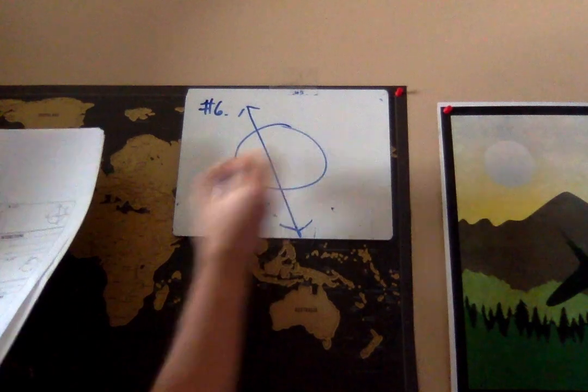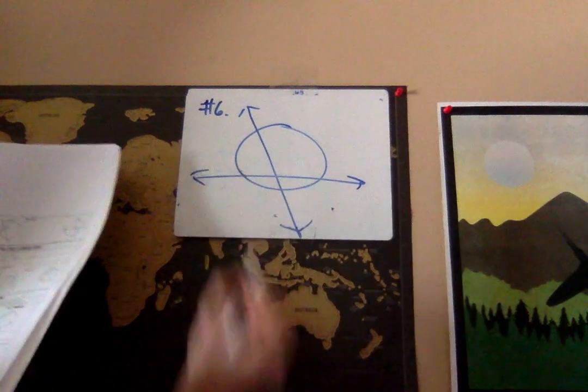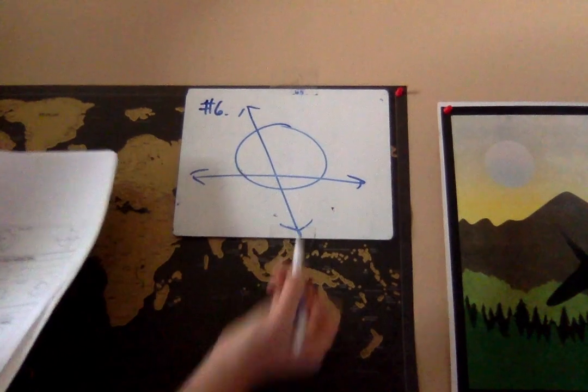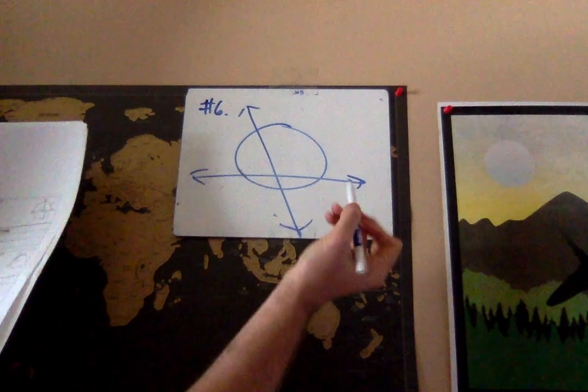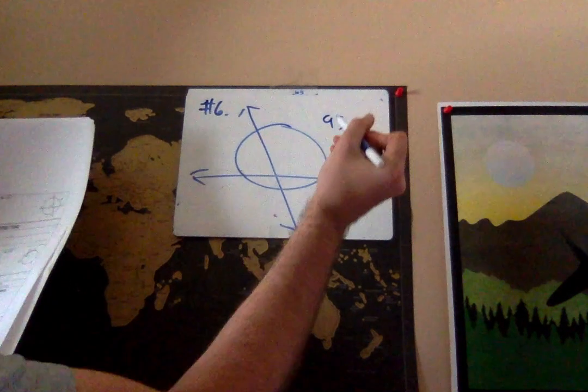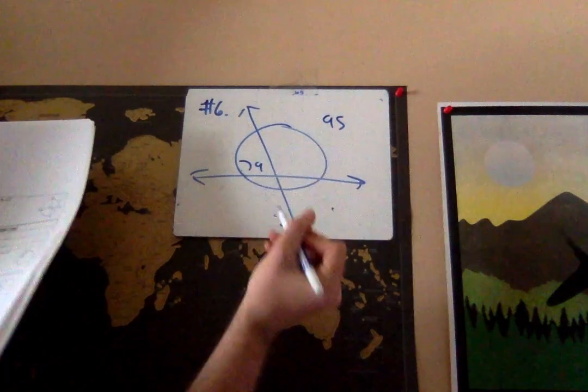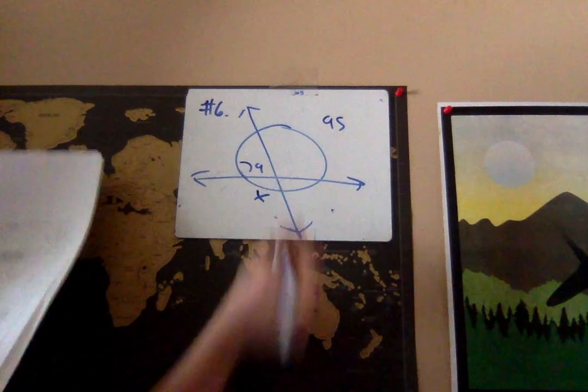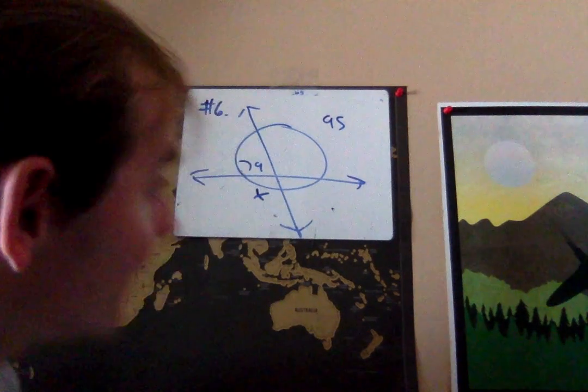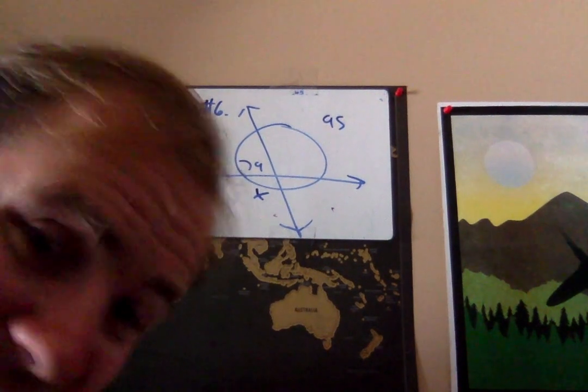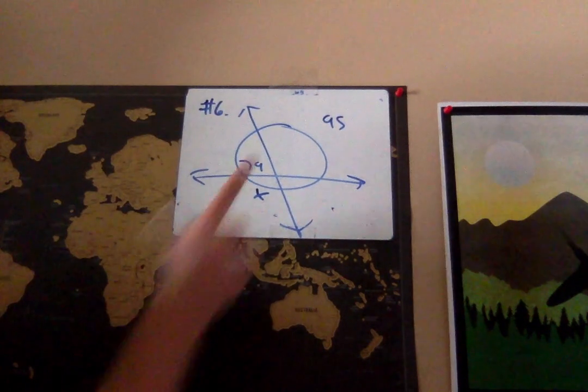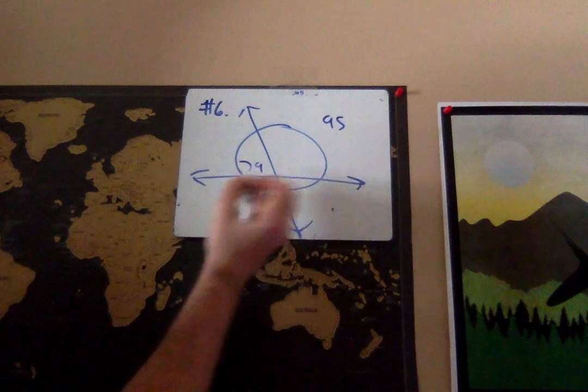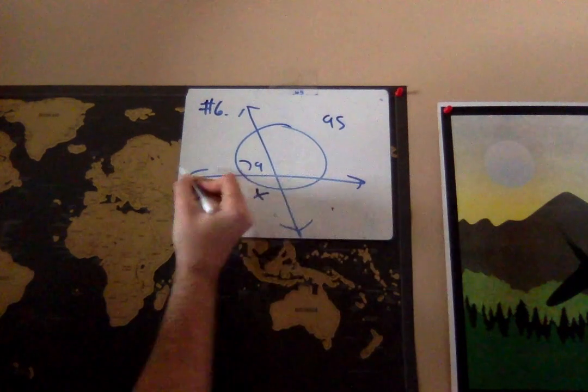Last one for this section. There's a secant and another secant. This is 95, this is 79, and they're asking us to find this right here. Now here's the problem: that 79 is not the angle we want to use. We want to use this angle in the middle. Notice this is a line. How many degrees are in a line?